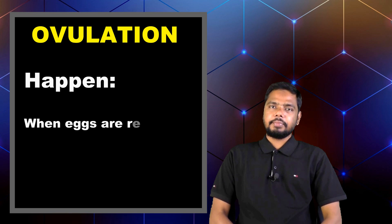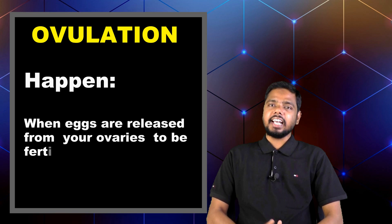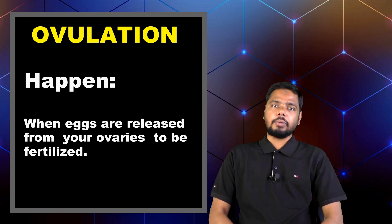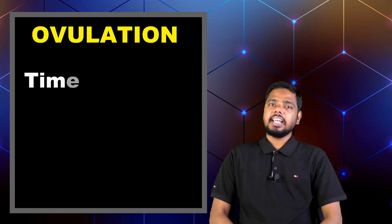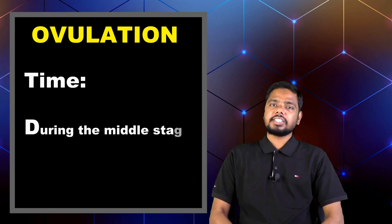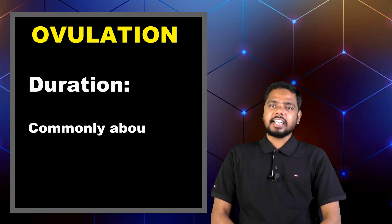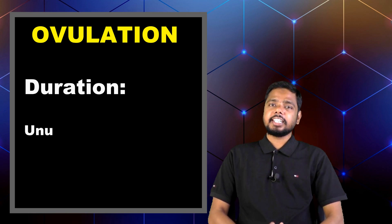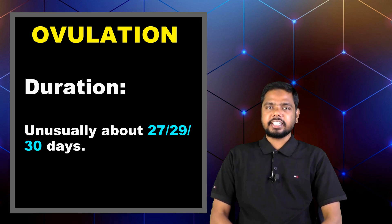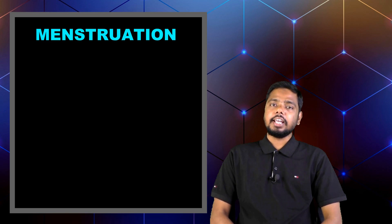Ovulation happens when eggs are released from your ovaries to be fertilized. This process starts during the middle of the women's cycle. The ovulation cycle is 28 days, but it can also be 27, 29 or 30 days.